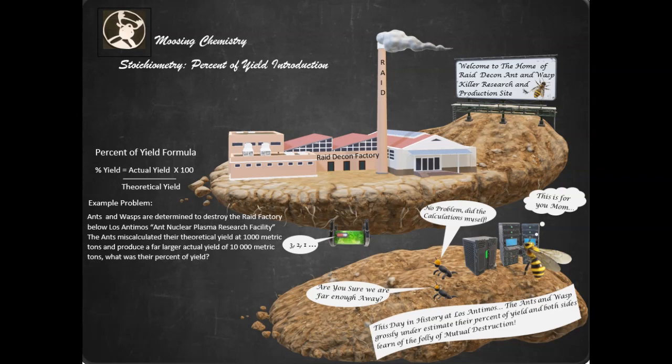What is the percent of yield? Well, let's look at the percent of yield formula. The percent of yield equals the actual yield, what we really find in the experiment, divided by the theoretical yield, what we should have got, times 100.